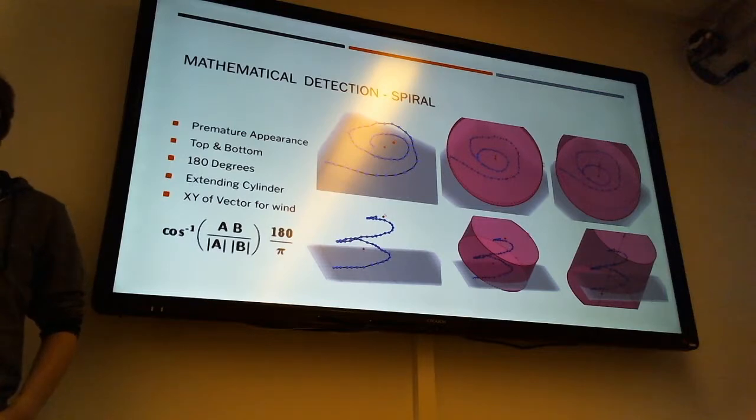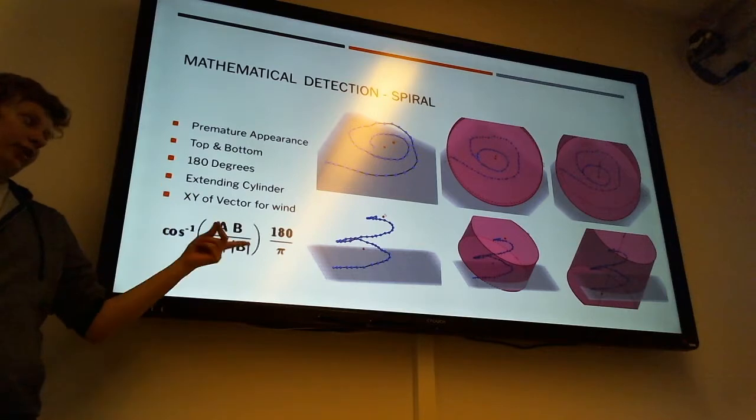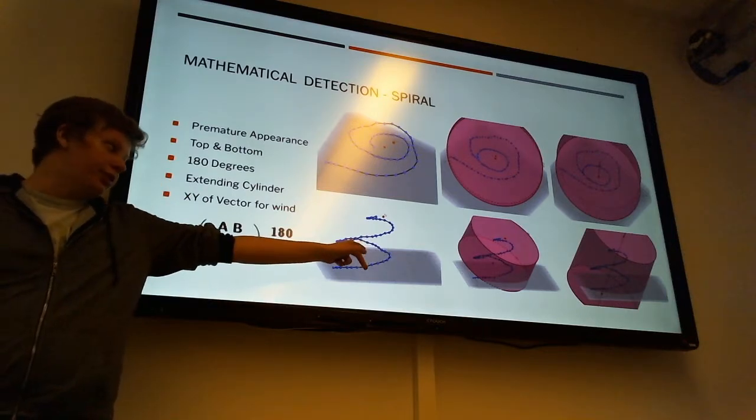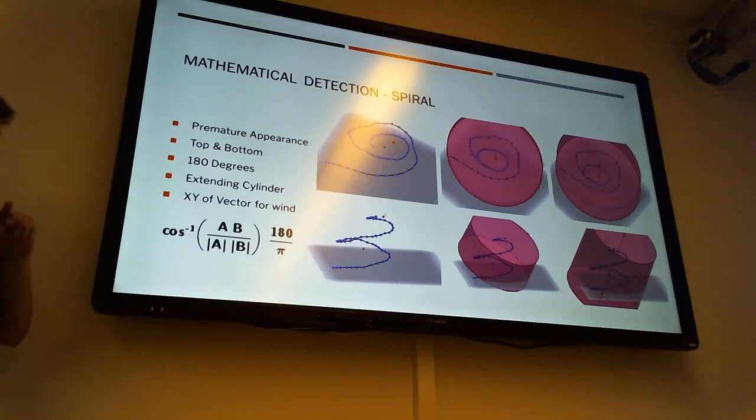And to get the wind speeds, we use the x, y variables of the vector between this point and that point. The x and y is for the wind direction, and the amplitude of that would be an inaccurate indicator of the wind speed.